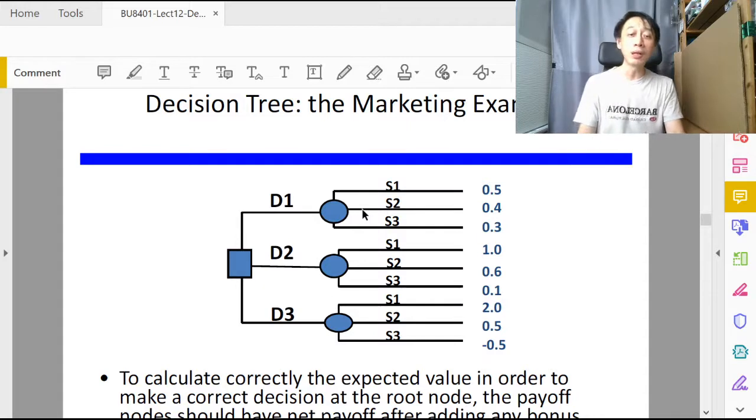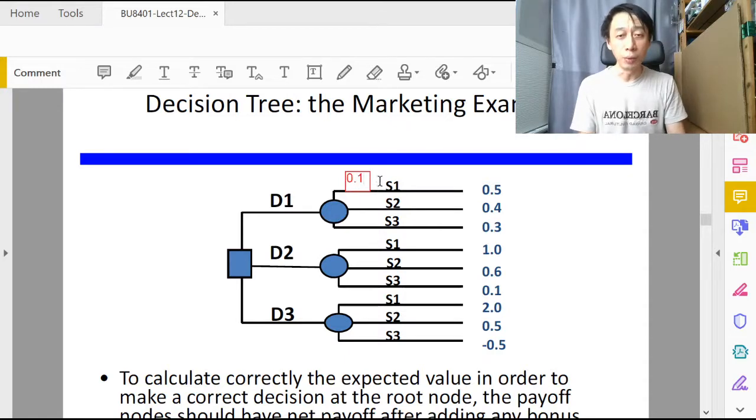We can represent them and we can also decorate this decision tree with corresponding probabilities. Because we also know that the probability of S1 happening was 0.1, so we're going to decorate it here. The probability will be S1, and then S2 occurs with a probability of 0.6, and S3 occurs with a probability of 0.3. Notice that they add up to one as should all probabilities.